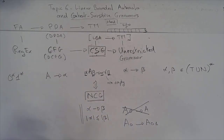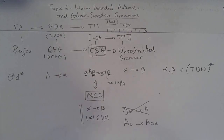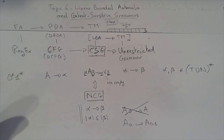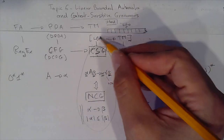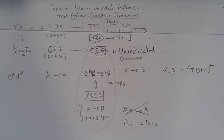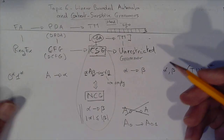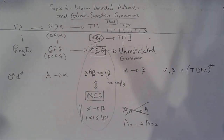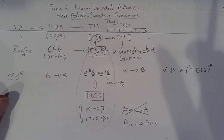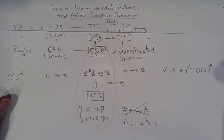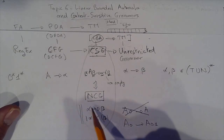So that's the notion of non-contracting grammar. In some sense it's a much easier definition than context-sensitive grammar, but they are both equivalent. Now, what's the relationship between non-contracting grammar and the linear bounded automaton? We're not going to show the full equivalence proof here, but let me give the gist and the intuition.